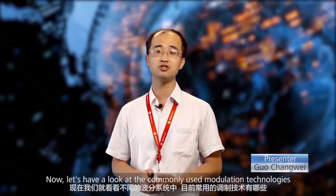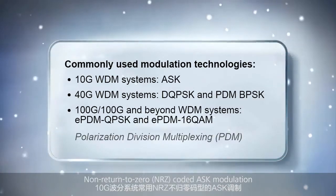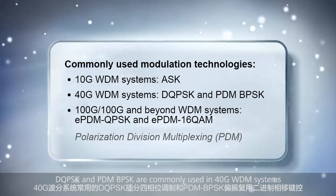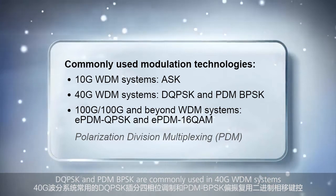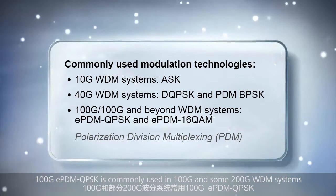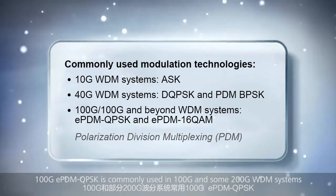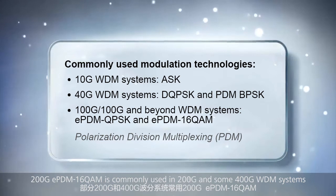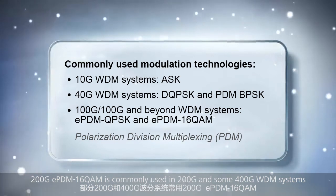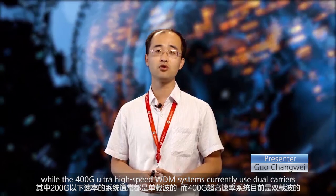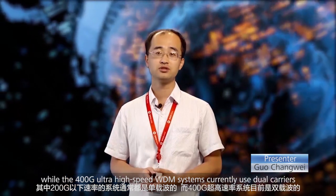Now let's have a look at the commonly used modulation technologies in different WDM systems. Non-return-to-zero coded ASK modulation is commonly used in 10G WDM systems. DQPSK and PDM-BPSK are commonly used in 40G WDM systems. 100G ePDM-QPSK is commonly used in 100G and some 200G WDM systems. 200G ePDM-16QAM is commonly used in 200G and some 400G WDM systems. Sub-200G WDM systems usually use single carriers, while 400G ultra-high-speed WDM systems currently use dual carriers.